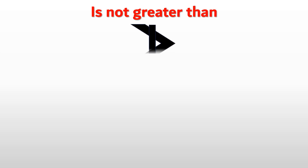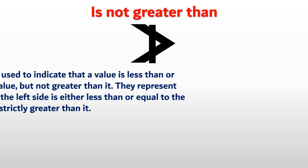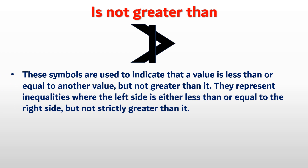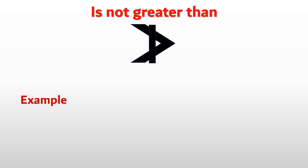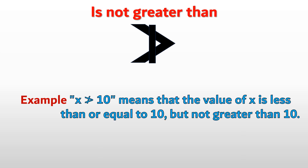Next, Is Not Greater Than. These symbols are used to indicate that a value is less than or equal to another value but not greater than it. They represent inequalities where the left side is either less than or equal to the right side but not strictly greater than it. Example: x is not greater than 10 means the value of x is less than or equal to 10 but not greater than 10.